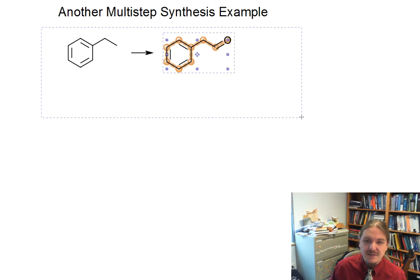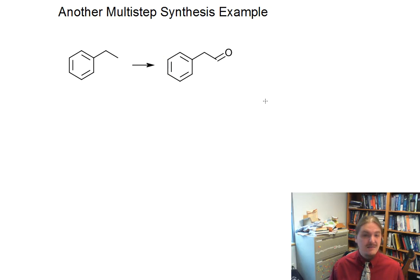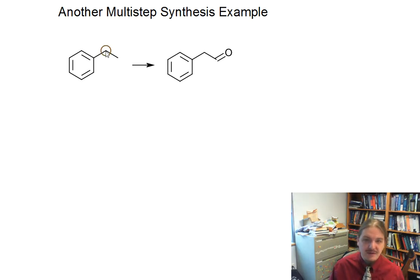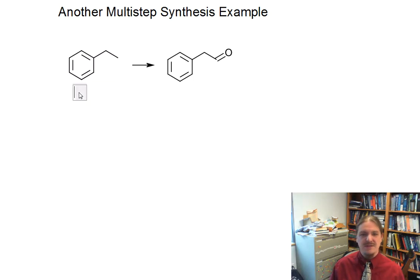I've set up this example synthesis problem where we're looking to convert ethylbenzene into 2-phenylacetaldehyde. One of the things that we want to do is work through that synthesis toolbox. What do we know this compound can do? What do we know that can make aldehydes? And are we changing the carbon skeleton? I want to do that one first because it's going to simplify the problem.